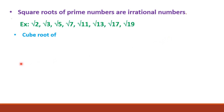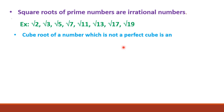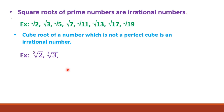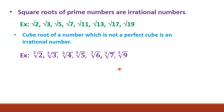The cube root of a number which is not a perfect cube is an irrational number. For example: cube root of 2, cube root of 3, cube root of 4, cube root of 5, cube root of 6, cube root of 7, cube root of 9, and so on.